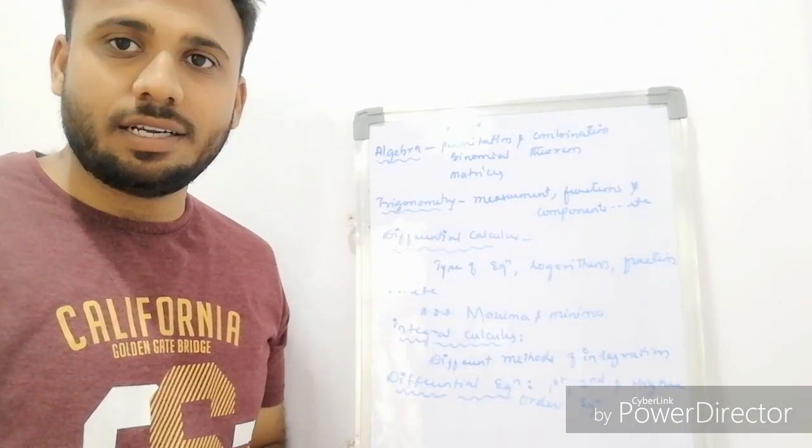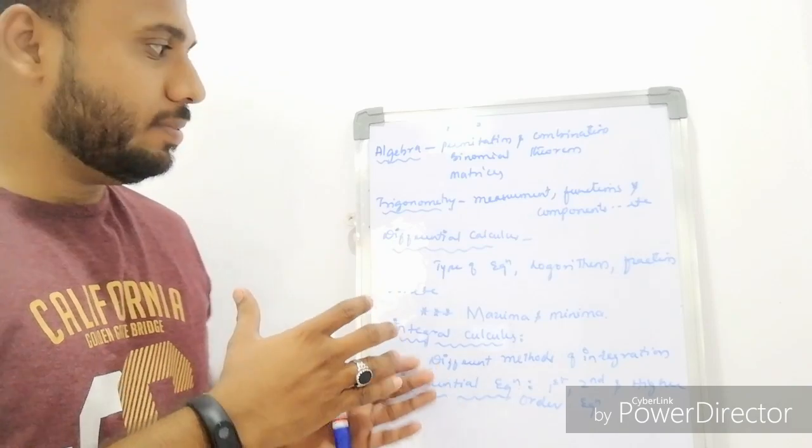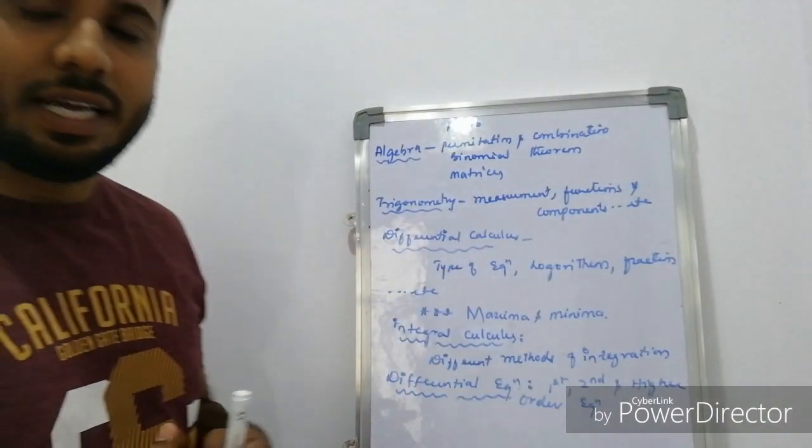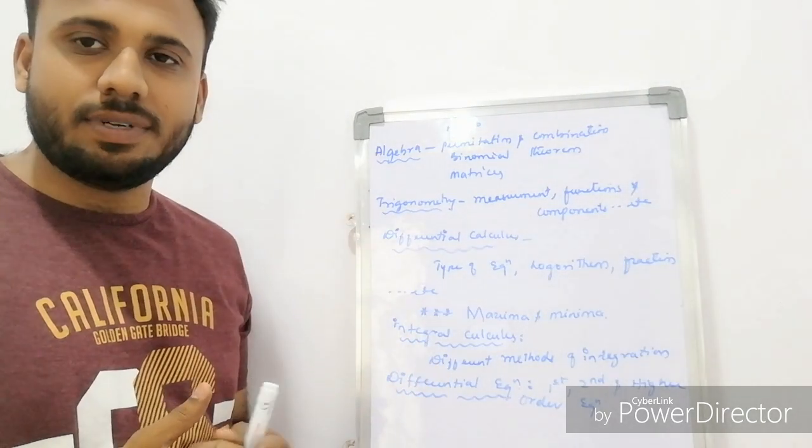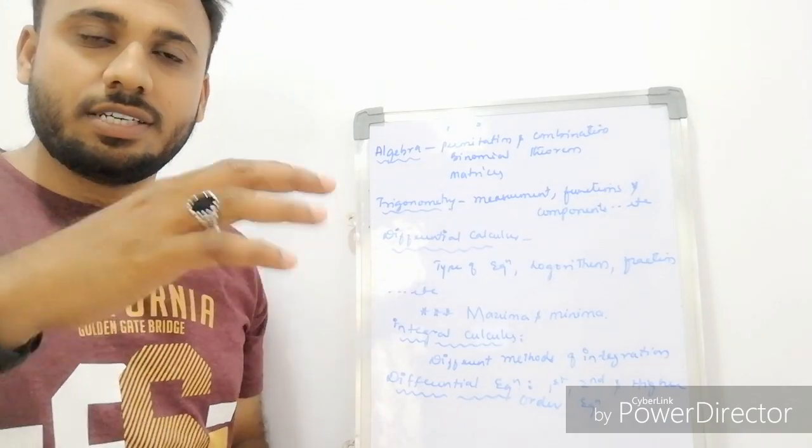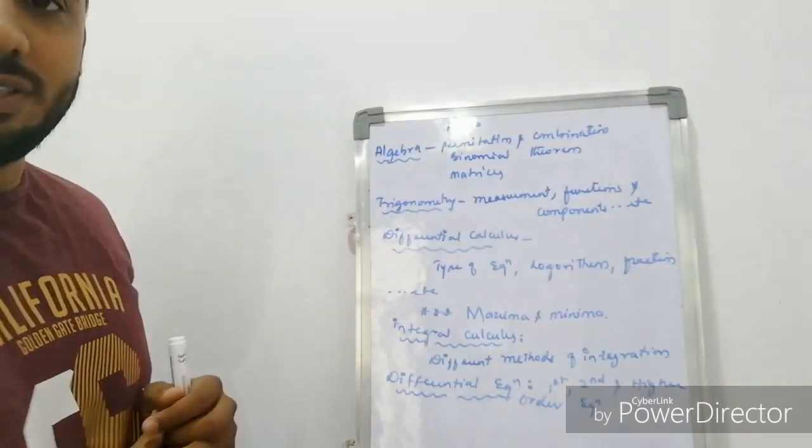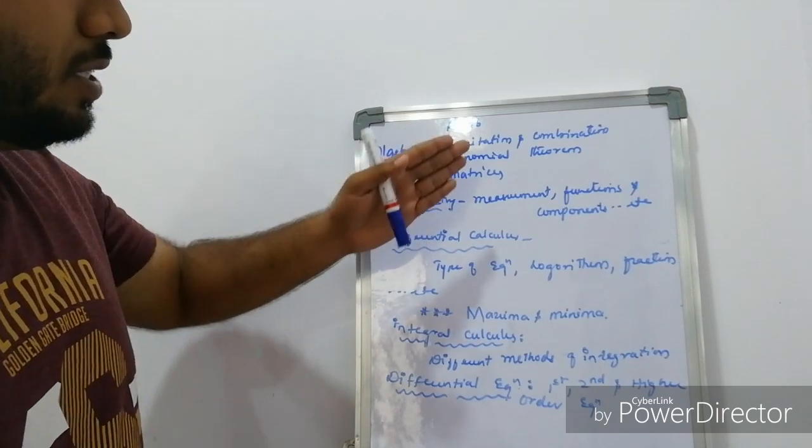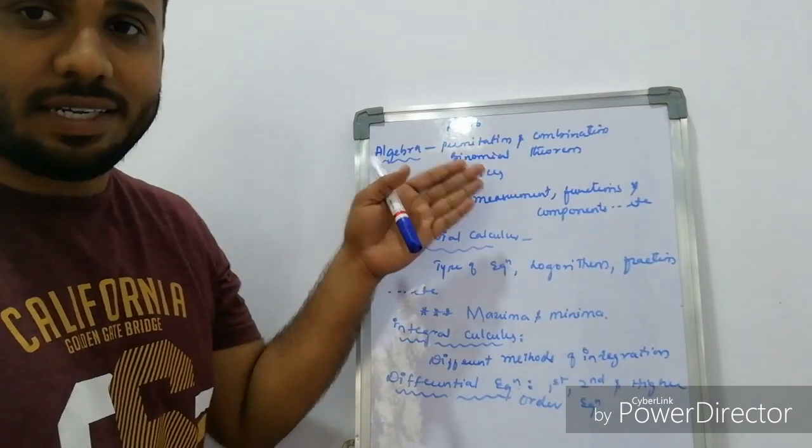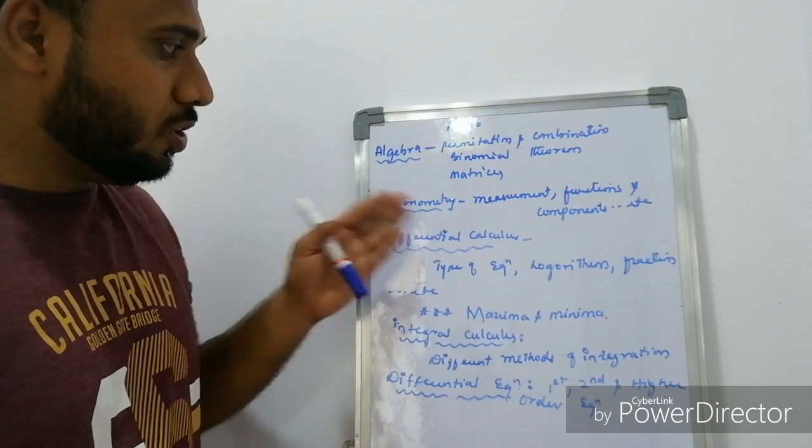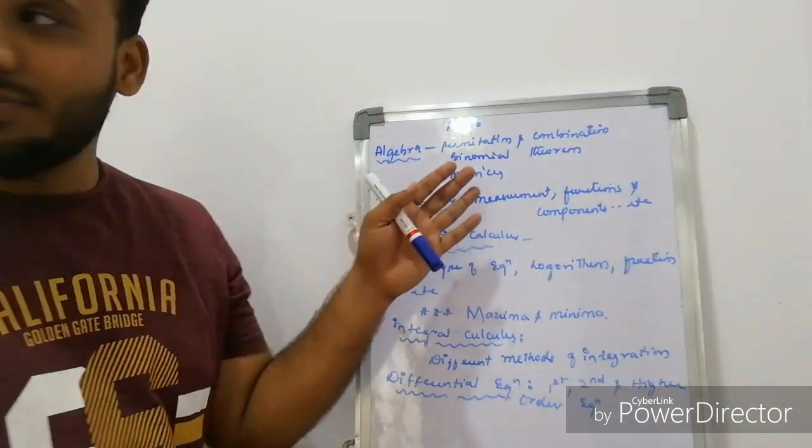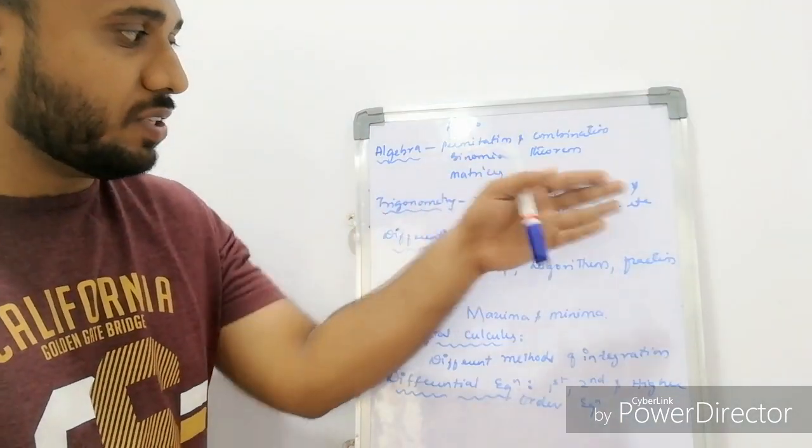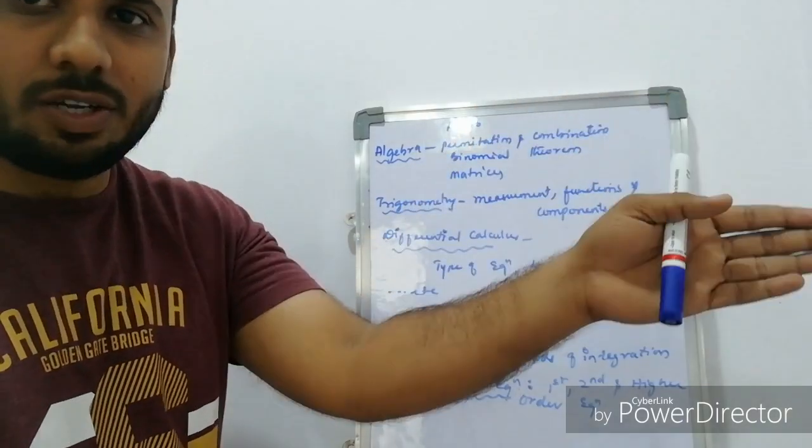Now, coming to R16 syllabus. The syllabus is consisted in 5 units. In R09 or R13 syllabus, they consist of 7 units. The 7 units are compressed into 5 units. The first unit consists of algebra. Algebra consists of permutation, combination, binomial theorem and matrices. And the second unit is trigonometry. In trigonometry, there are 3 types: mensuration, functions and components. And there are so many topics also.